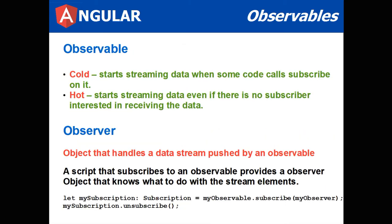An observable could be cold, that is, it starts streaming data when some code calls subscribe on it, or hot, it starts streaming data even if there is no subscriber interested in receiving the data. We're going to be talking about cold streams or cold observables.